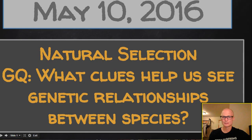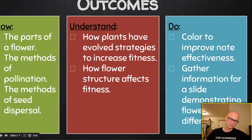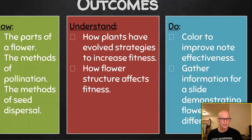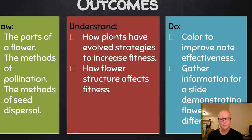Tuesday, May 10th. Same guiding question, same main topic. After watching the video, we want to make sure we know the parts of a flower, the methods of pollination, the methods of seed dispersal in plants — it tells us a lot about patterns in nature. We want to know how plants have evolved strategies to increase their fitness and how flower structure affects that fitness.